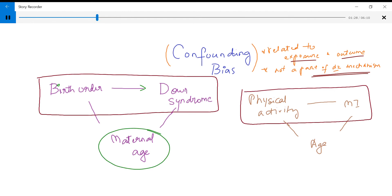you will see that actually the birth order and maternal age are related in the sense that Down syndrome is more related to maternal age than it is to birth order because like as the birth order increases, maternal age also increases.